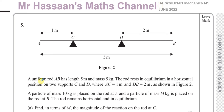This question is about a uniform rod AB - so this is a question about moments. The rod is uniform, which is an important word. It has a length of 5 meters and a mass of 5 kilograms. The rod rests in equilibrium - another very important word - in a horizontal position on two supports C and D, where AC equals 1 meter and DB equals 2 meters as shown in figure 2.